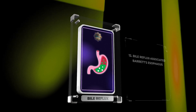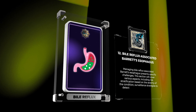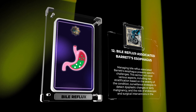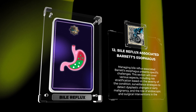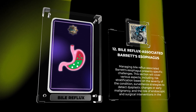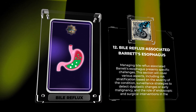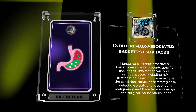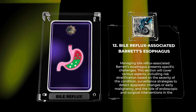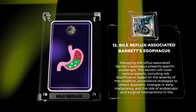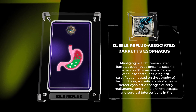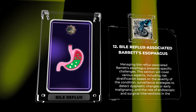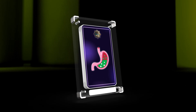Managing bile reflux associated Barrett's esophagus presents specific challenges. This section will cover various aspects, including risk stratification based on the severity of the condition, surveillance strategies to detect dysplastic changes or early malignancy, and the role of endoscopic and surgical interventions in the management of this high-risk group.